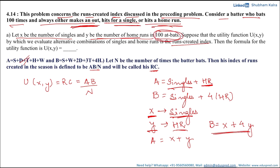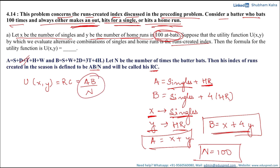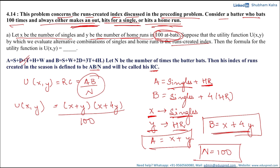We are also given that n equals 100. Substituting A, B, and n into the runs created formula, the utility function is: u(x, y) equals (x plus y) multiplied by (x plus 4y), all divided by 100. This is the expression for the utility function.